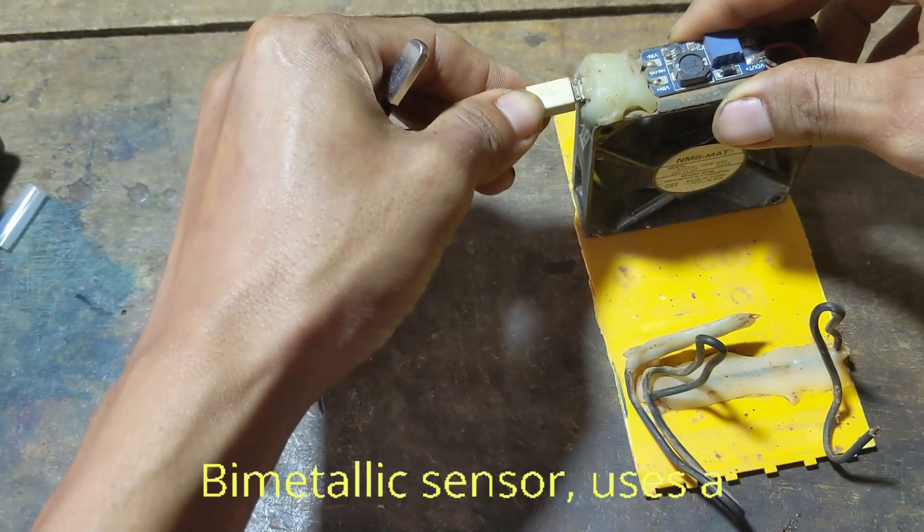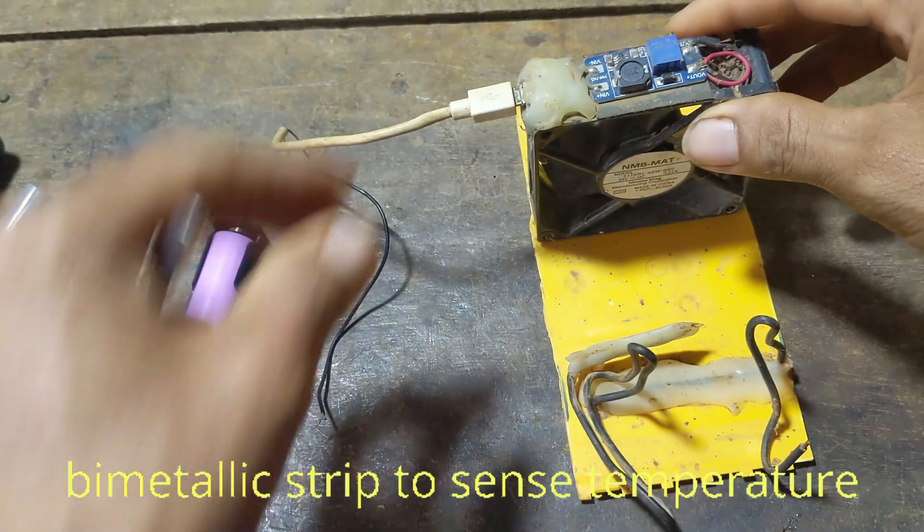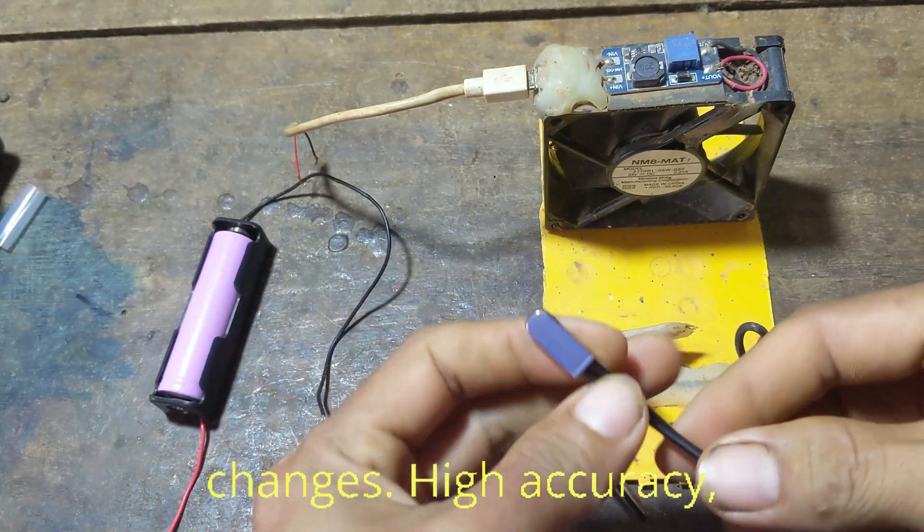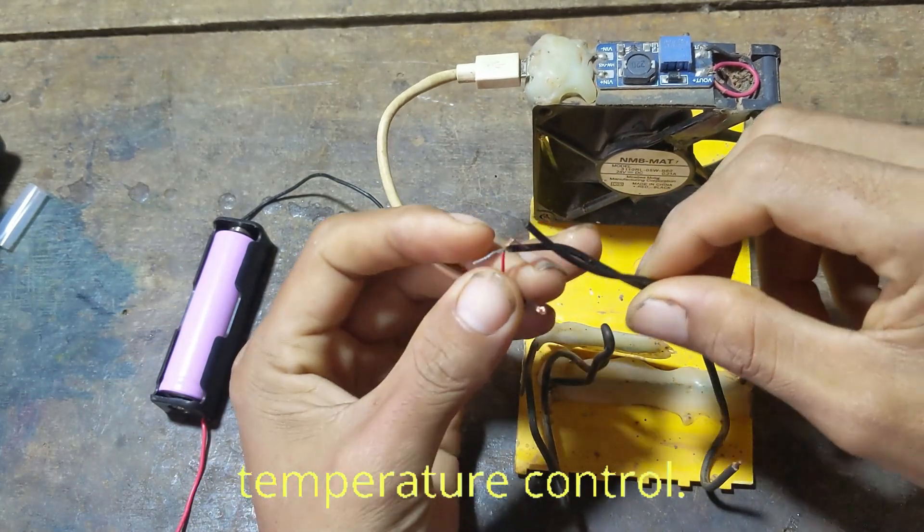Bimetallic sensor: uses a bimetallic strip to sense temperature changes. High accuracy: provides reliable and accurate temperature control.